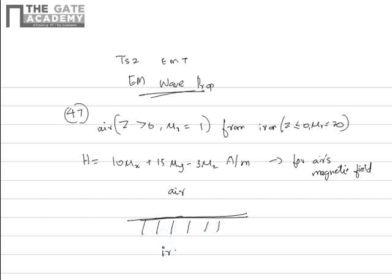This is iron. Z equals zero at the boundary. Z is greater than zero for air and Z is less than or equal to zero for iron. For iron, mu_r equals 20, and for air, mu_r equals 1.